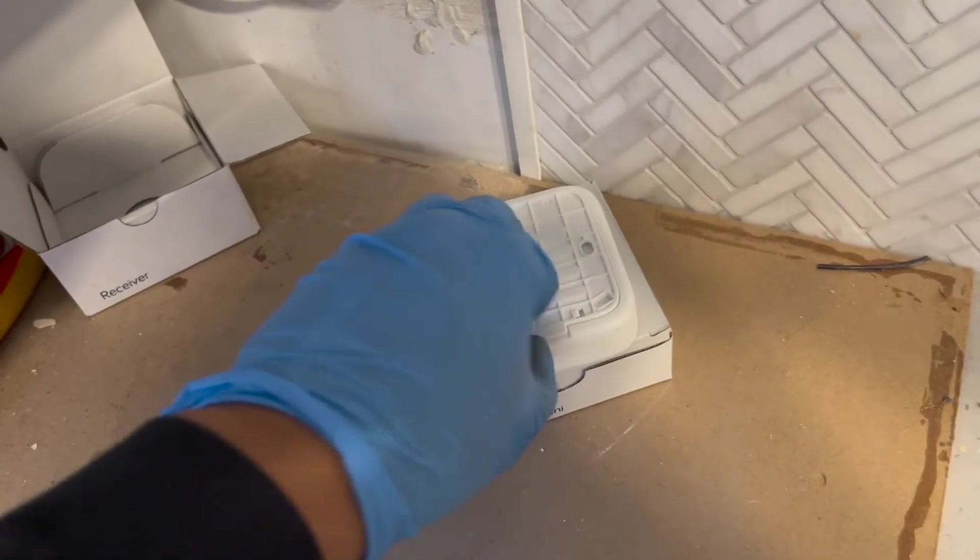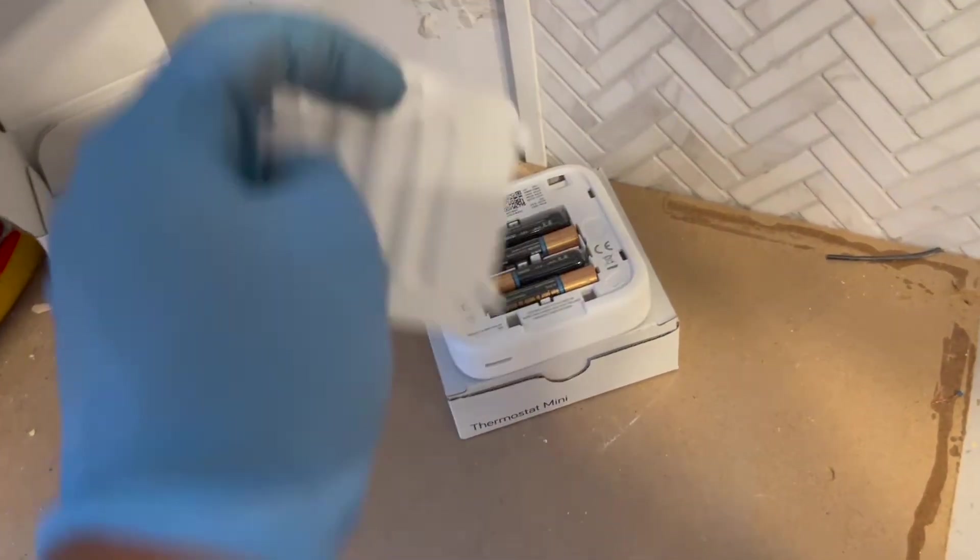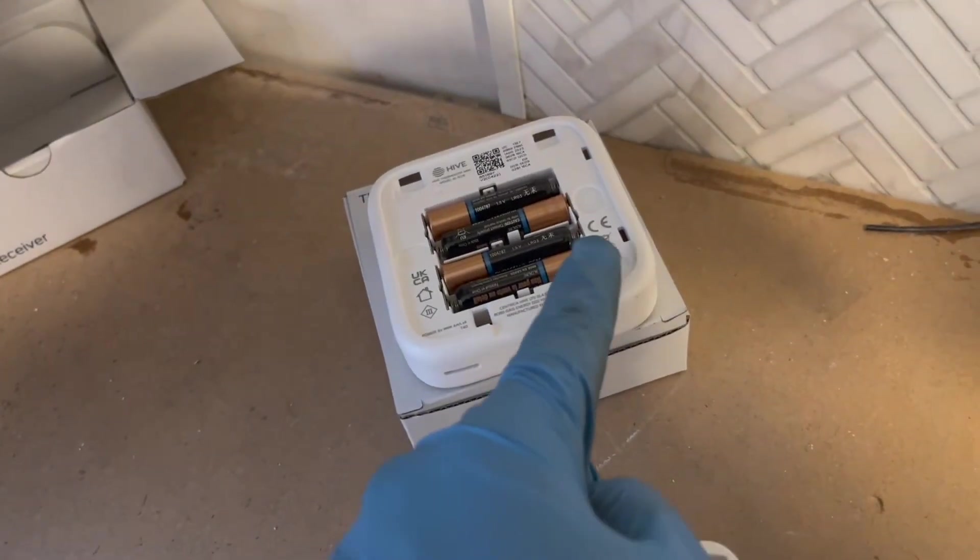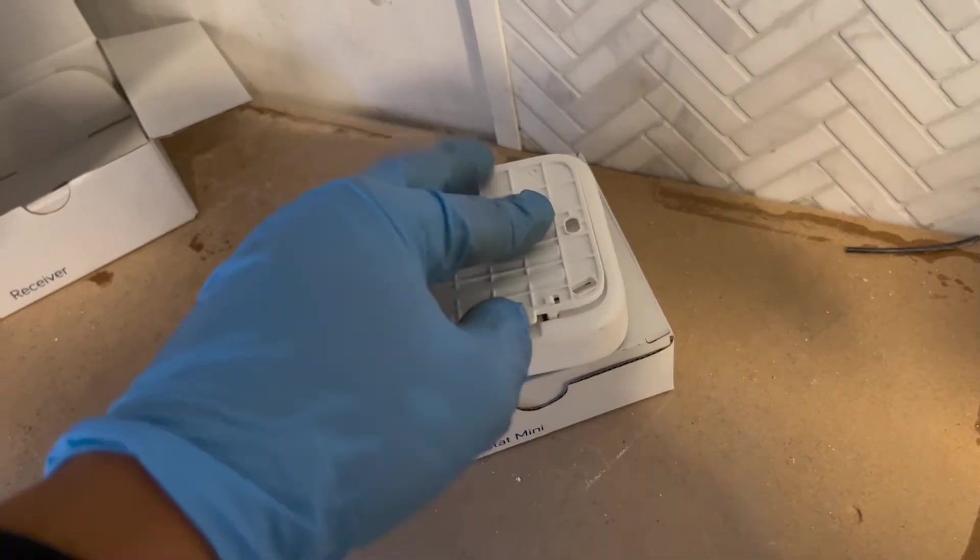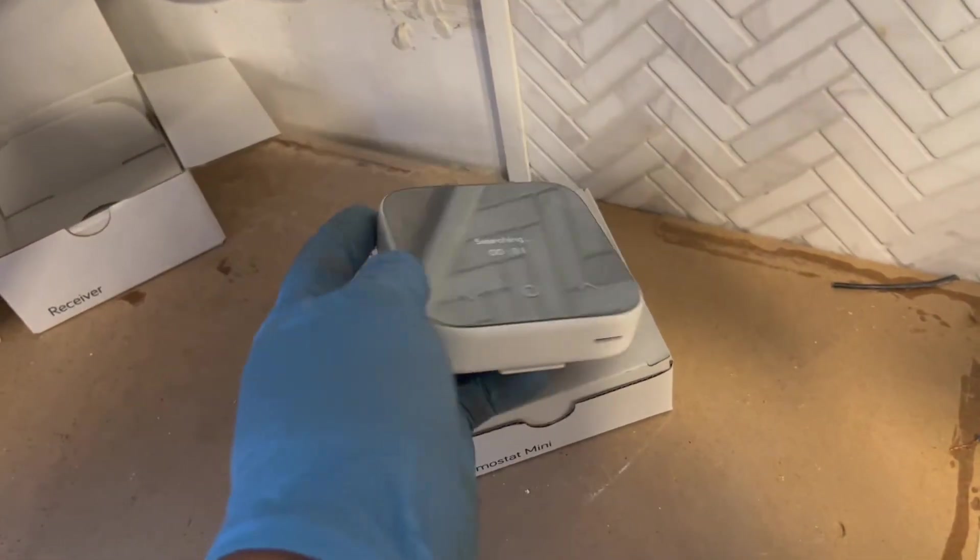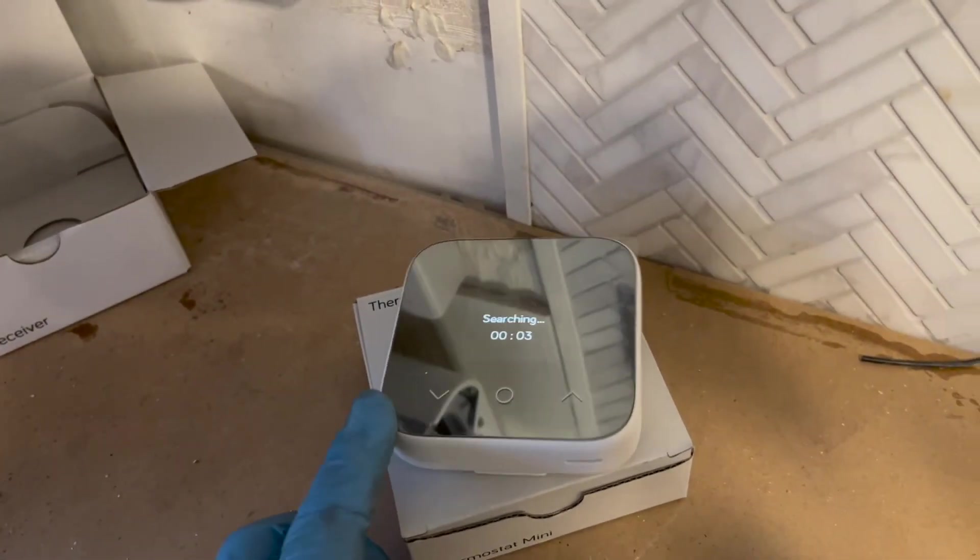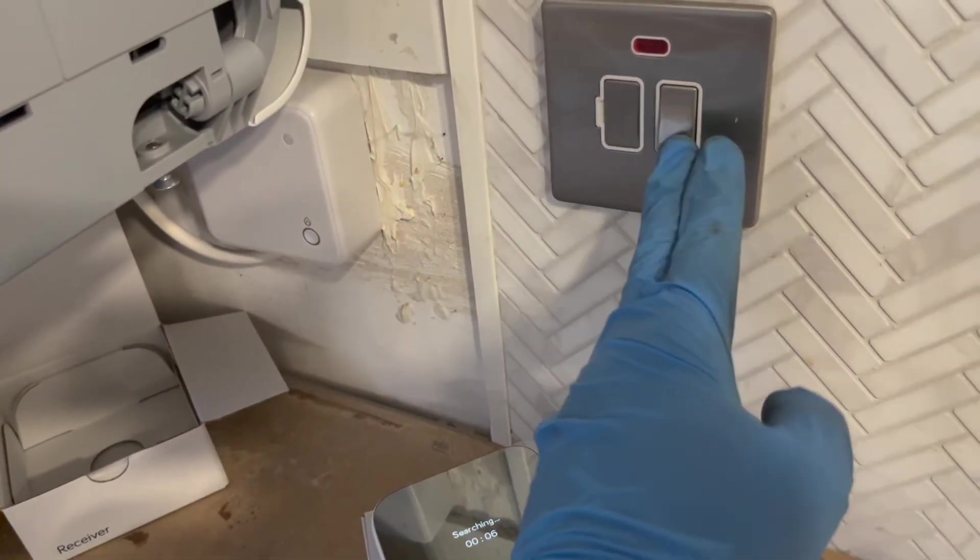In terms of the thermostat now, flip it over, take the back case off, and you'll notice there's a white piece of paper that's really small. Take that out, make sure all the batteries are in. Once you put the case back on, flip it over, the thermostat should say searching.